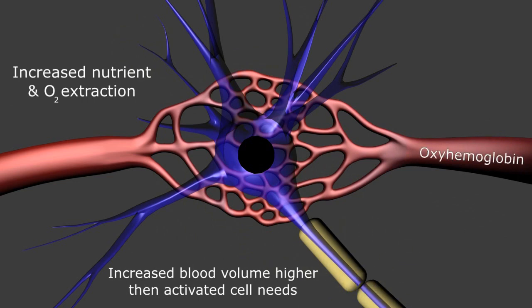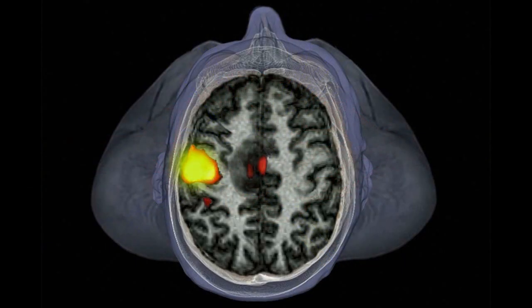And since the oxyhemoglobin is diamagnetic, there is a relative increase in the local NMR signal compared to the inactive neurons producing a bright signal in the region of neuronal activity.